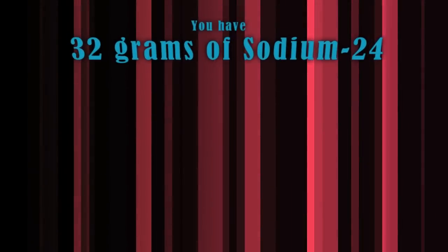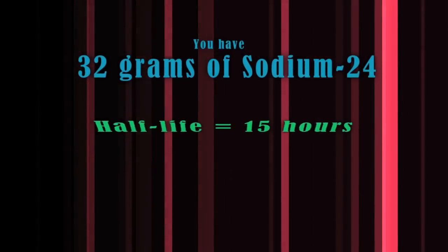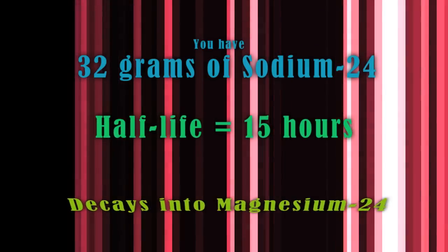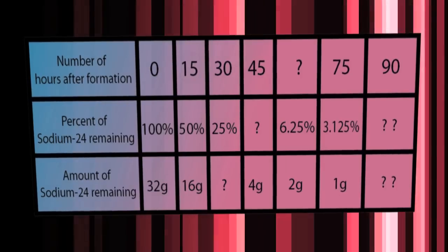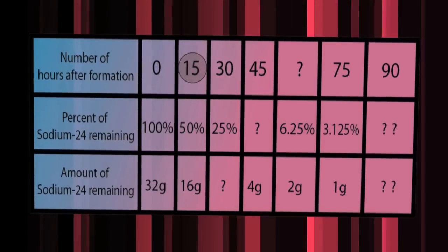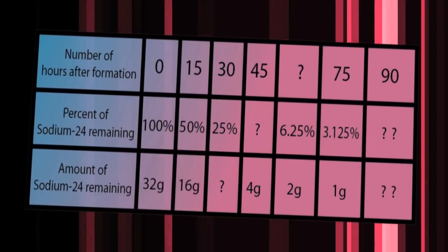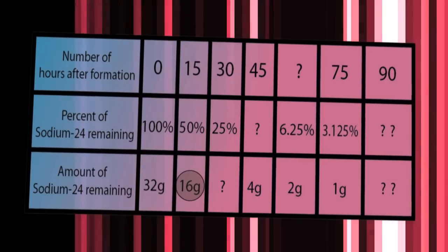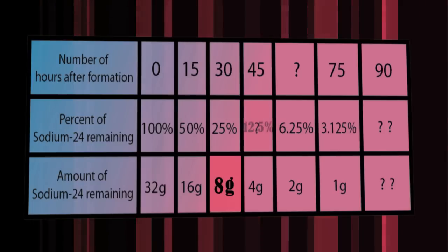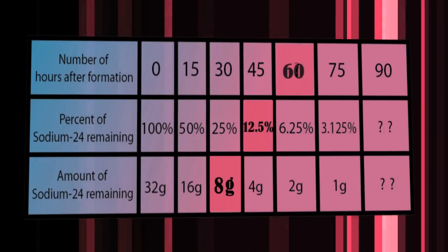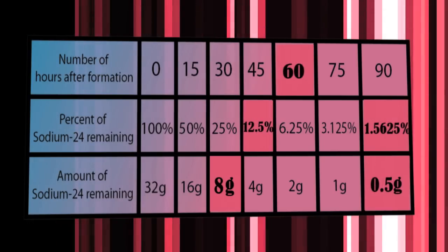Suppose you had 32 grams of sodium-24, which has a half-life of 15 hours and decays into magnesium-24, a stable form of magnesium. An understanding of half-life and some simple math can help you determine how much of the original material exists after a given period of time. After 15 hours, half of the sodium-24 would have decayed into magnesium-24, leaving 16 grams of the original isotope. After 30 hours, there would only be 8 grams of sodium-24 left, and so on, until there's not enough sodium-24 left in the sample to detect its radioactivity.